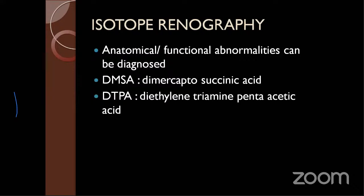Radioactive isotope investigations: these can diagnose anatomical or functional abnormalities. Two substances — DMSA and DTPA. Mnemonic: S in DMSA stands for Structural — anatomical/structural abnormalities are diagnosed by DMSA scan (dimercaptosuccinic acid). P in DTPA stands for functional (Physiological) — functional abnormalities of the kidney are diagnosed by DTPA scan (diethylene triamine penta-acetic acid).